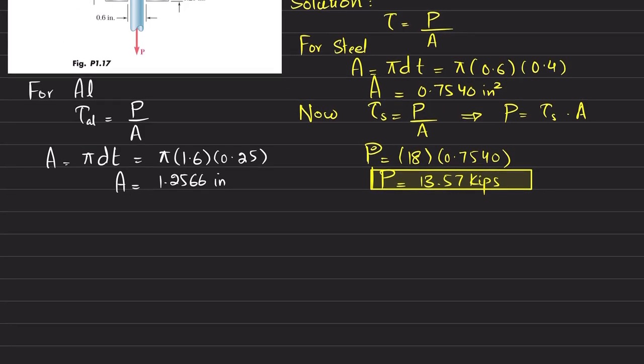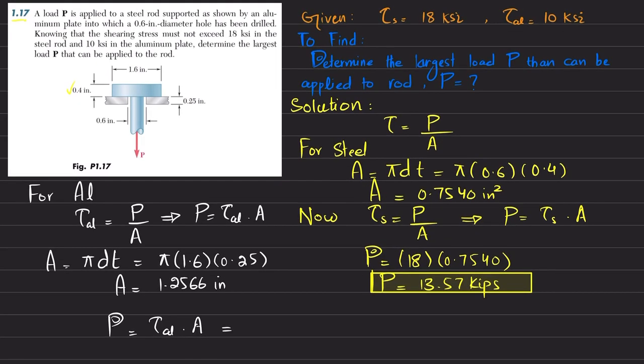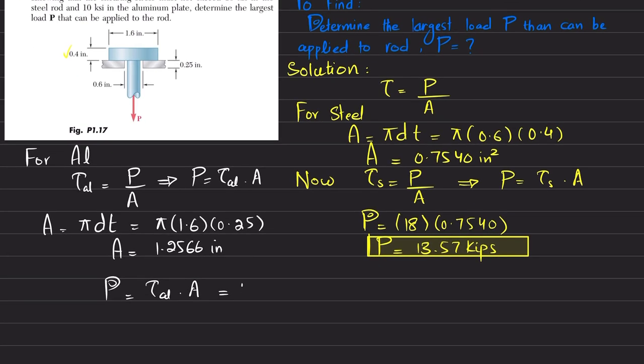Now put the value. We will get P equal to τ allowable in aluminum times A. So P equals the shearing stress in aluminum times A. The shearing stress in aluminum is 10 ksi, so 10 multiplied by area 1.2566, which gives you 12.566 kips, or approximately 12.57 kips.